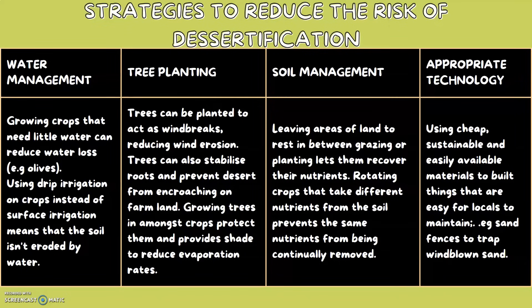The third method is soil management. Leaving areas of land to rest in between grazing or planting lets them recover their nutrients. Rotating crops that take different nutrients from the soil prevents the same nutrients from being continually removed.